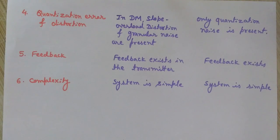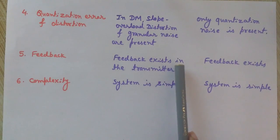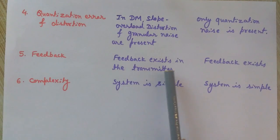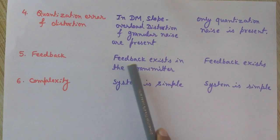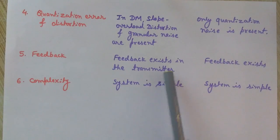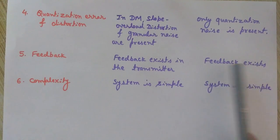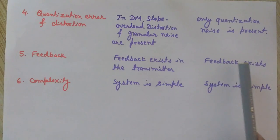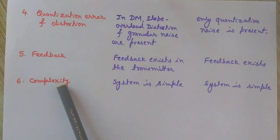The fifth point is feedback. Feedback exists in the transmitter — if you look at the circuitry, feedback is present in the transmitter of Delta modulation, and this is also present in adaptive Delta modulation.